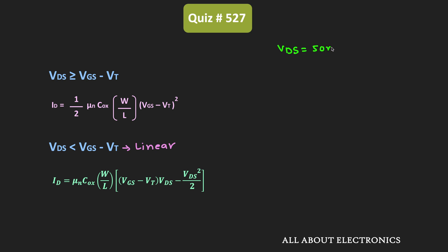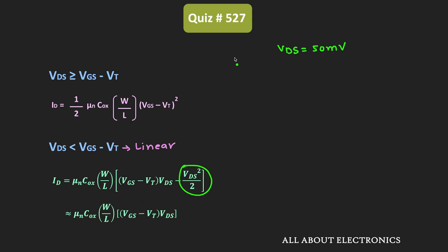Since VDS is equal to 50 millivolts, its value is negligible. If we square that term it becomes even smaller, so we can neglect it. Approximately, the drain current ID in the linear region simplifies to: ID ≈ μn × Cox × (W/L) × (VGS − VT) × VDS.